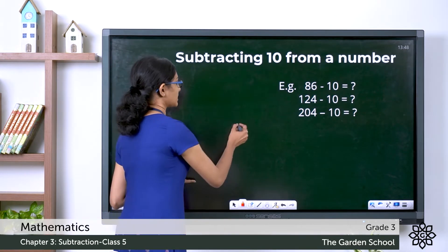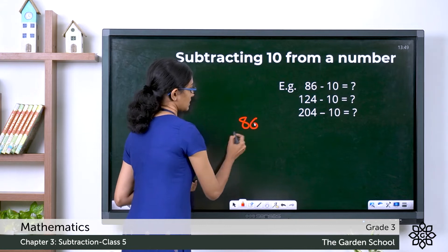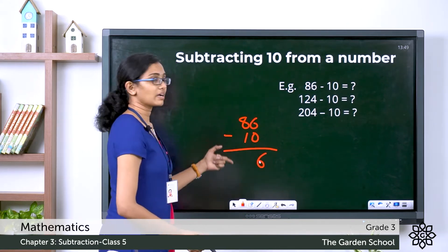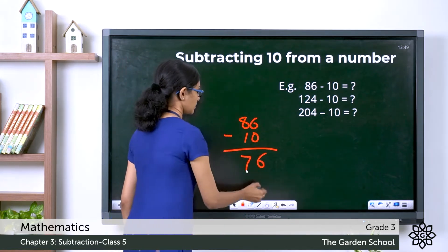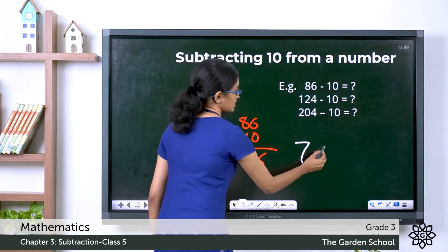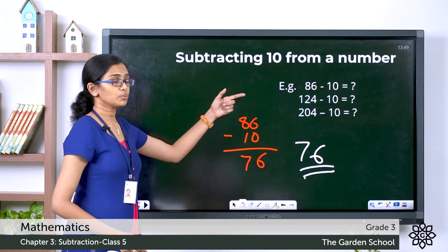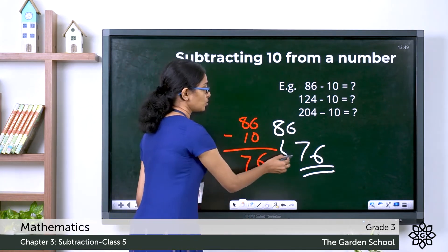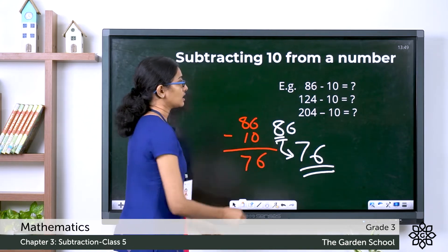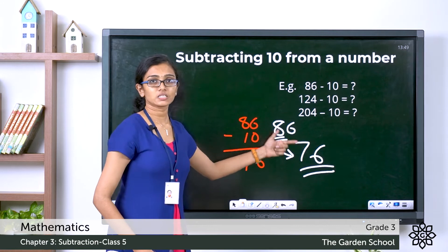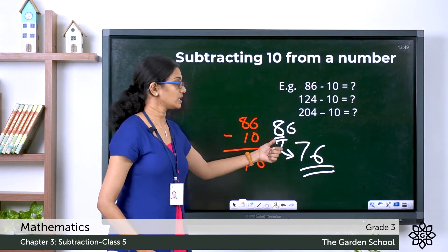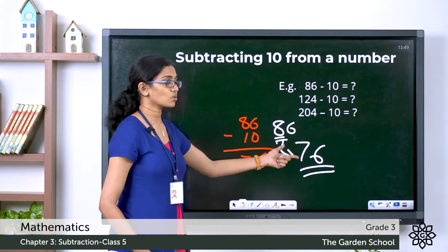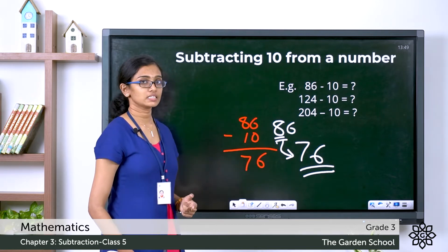What is the difference of 86 and 10? 86 minus 10: 6 minus 0 is 6, 8 minus 1 is 7. So the difference here is 76. The minuend was 86 and after subtracting 10 from it, it changed to 76. Only the digit in the tens place changed — there is no change in other digits. Here there is only the ones digit remaining, so there is no change in the ones digit. Only the tens digit is changed.